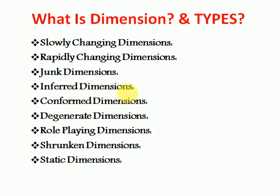Inferred dimensions means if you are receiving fact table data and your dimension is not yet ready, at that time you can insert some null values into your dimension. Conformed dimensions means any dimension which is used across all the data marts — those dimensions will be called conformed dimensions. Degenerate dimensions means some fact tables contain master data as well — both fact and dimension table data along with foreign keys — those types of tables are called degenerate dimensions.